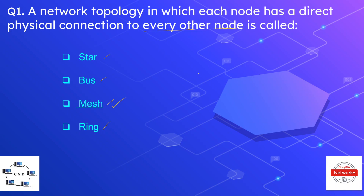In a mesh topology, every node has a direct connection to every other node. For example, if we draw four nodes, every node has a direct physical connection to every other node. This is an example of a mesh topology.